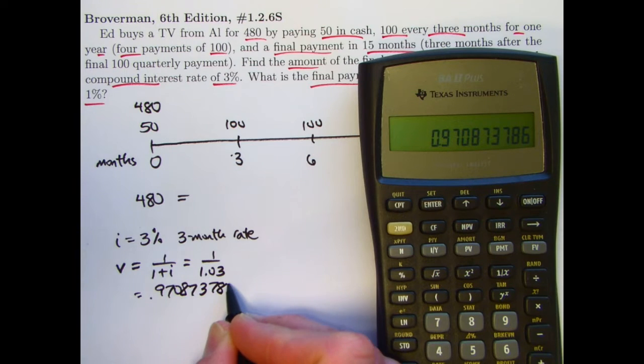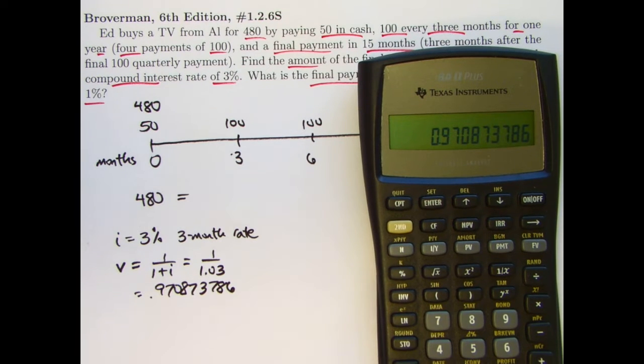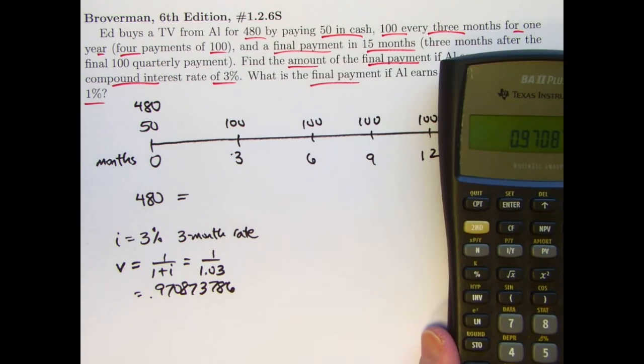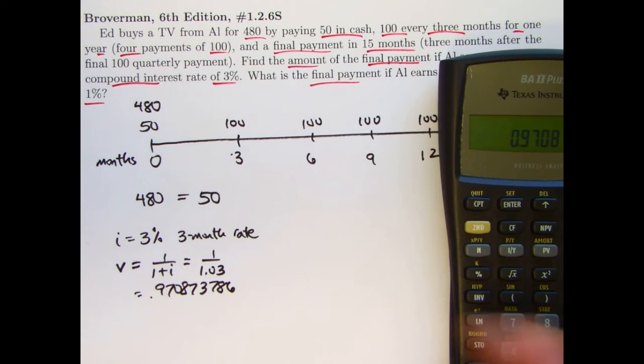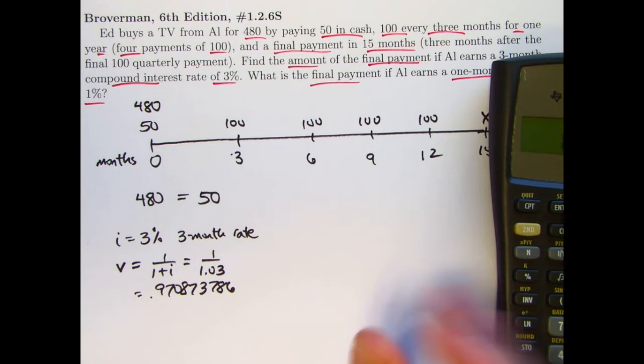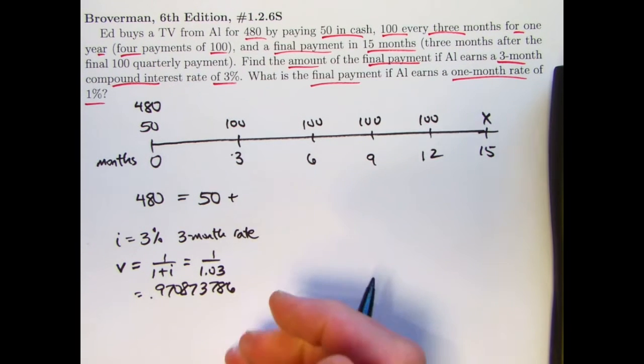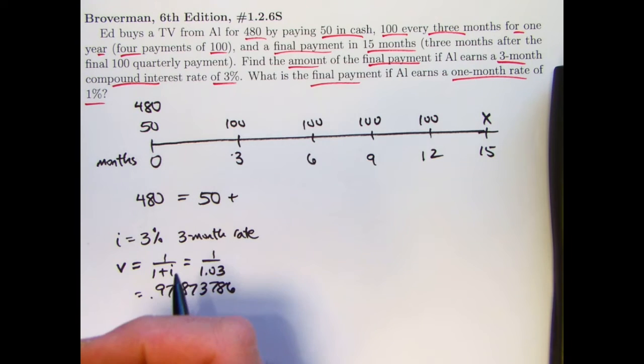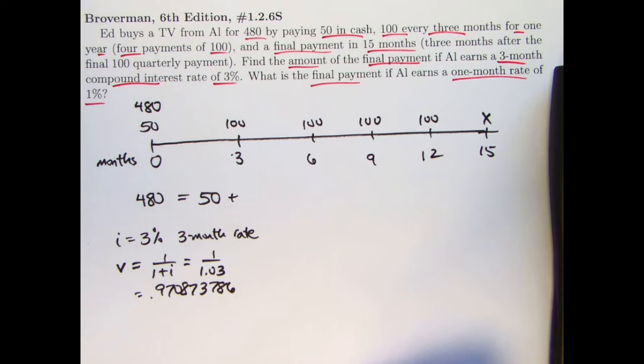Let's go ahead and carry all the decimals here that we see, 73786. If I use the memory feature in the calculator, I probably wouldn't need to write that down, but let's just go ahead and write it down for safekeeping here. The 50 is at time zero, so I don't have to discount that back in time.